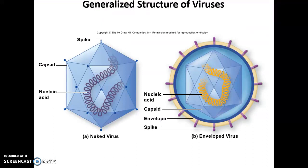Figure 5.3 shows the general structure of viruses. On the left is the naked virus — the simplest form — which has nucleic acid, a capsid, and a spike, making it a nucleocapsid. On the right in B, you have an envelope that surrounds the nucleocapsid. It's called naked and enveloped — not naked and clothed, even though that might make more intuitive sense.